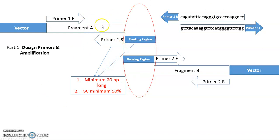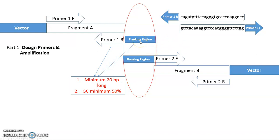Here is the schematic diagram. Primer 1F is the forward primer — this is a normal primer with no special design. But for the reverse primer, there is a flanking region, which is not a normal primer design. This part will bind with the template, but for the flanking region there is no binding region — it will remain as a flanking region and should be complementary to another fragment.